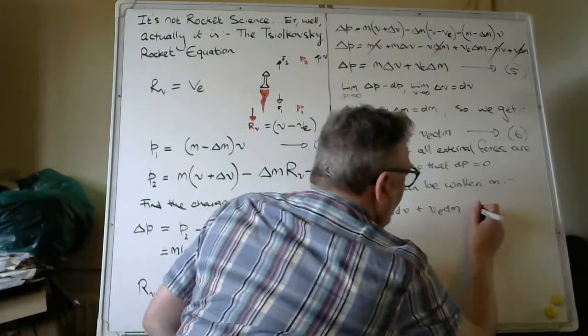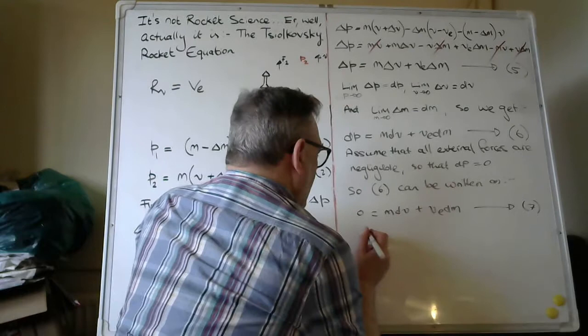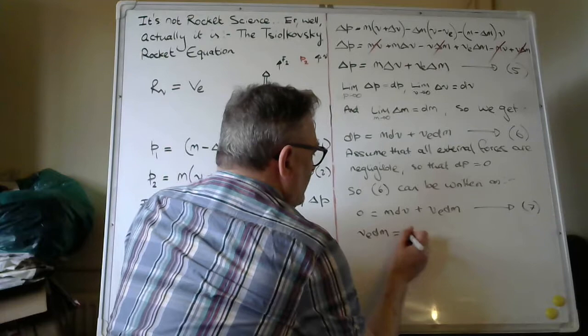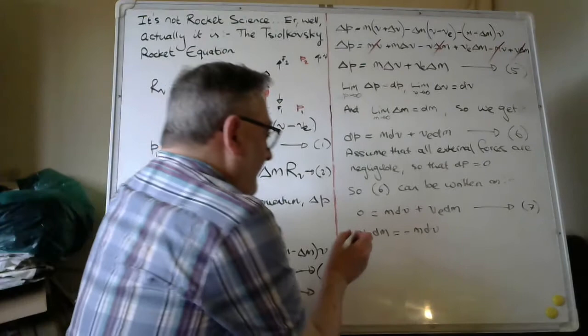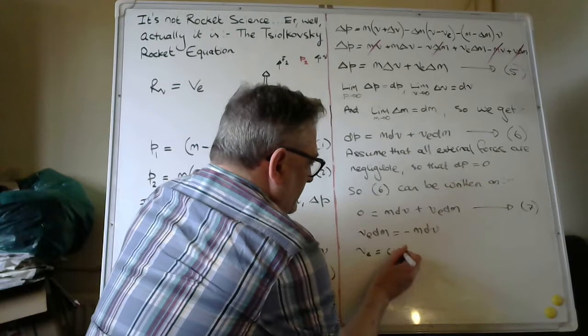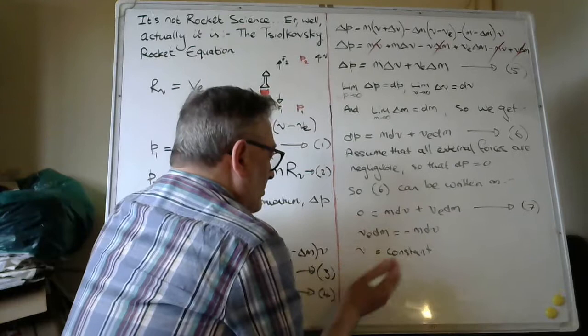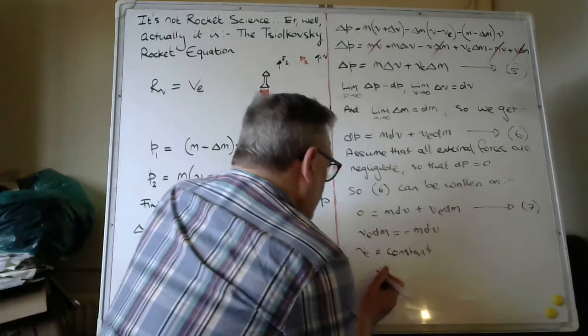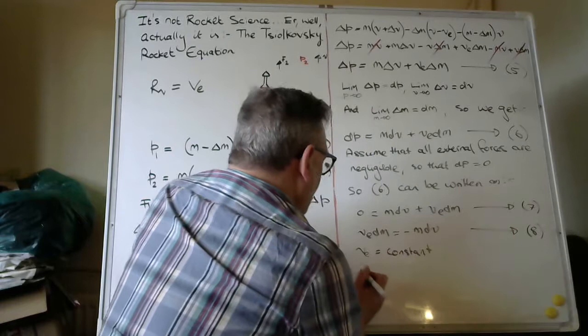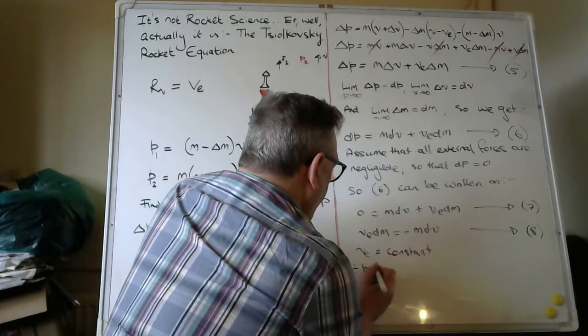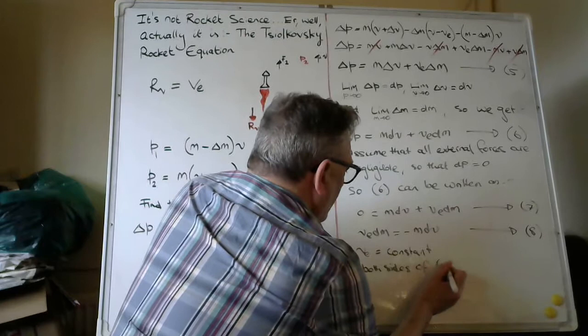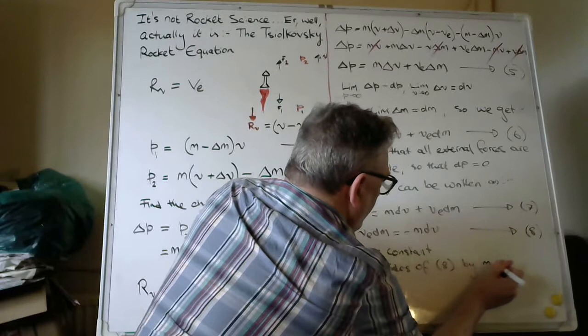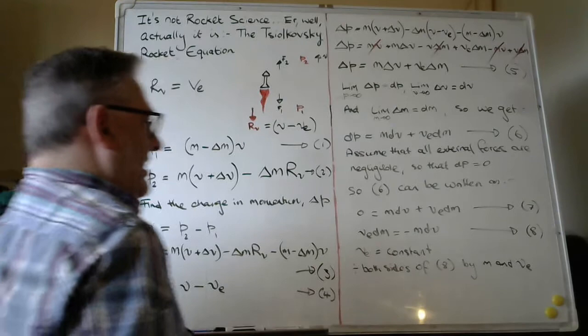Right, so if dp is equal to zero, we've got zero. And we'll just relabel some of these equations. So equation six can be written as zero equals M dv plus VE dm. Now I'm going to rearrange this equation seven to get VE dm equal to minus M dv. VE here is a constant. So the velocity of exhaust, I think I might have done close to the beginning, but the velocity of exhaust is taken to be a constant.